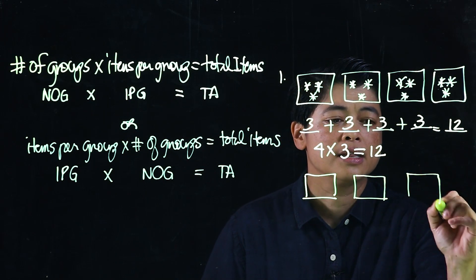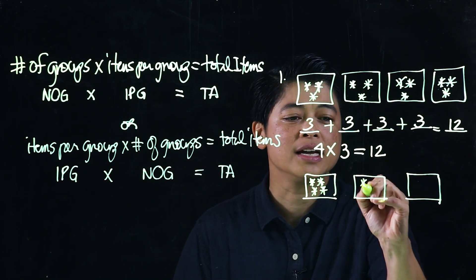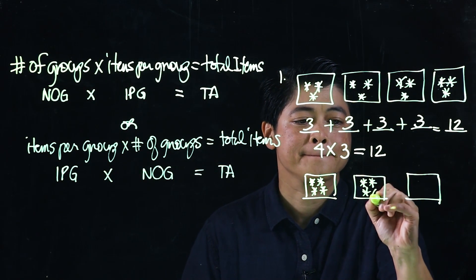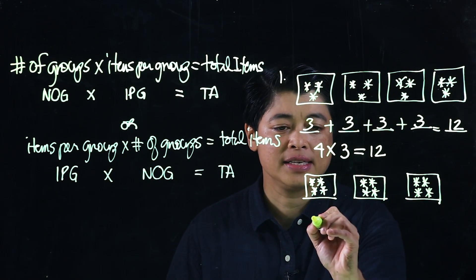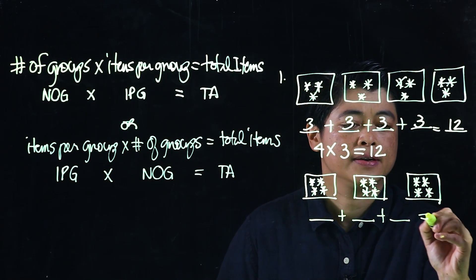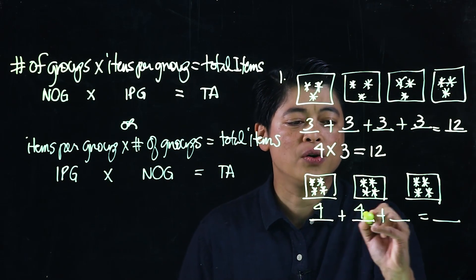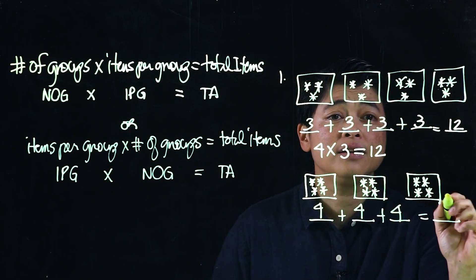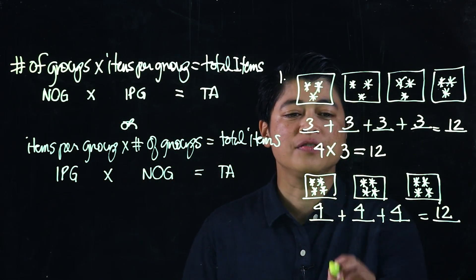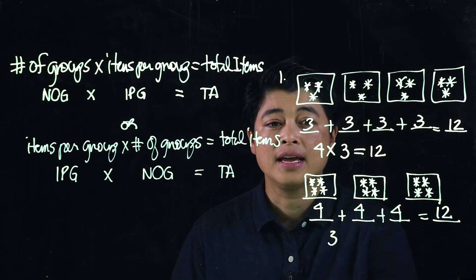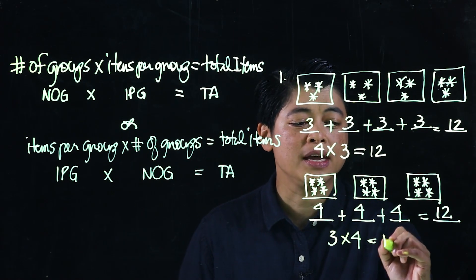In the same problem, they give you three boxes and show that the answer will be the same. The three boxes this time have four items inside. So this is four plus four plus four, which when added together is also 12. Following the formula: number of groups is three, items per group is four, and the total is 12.